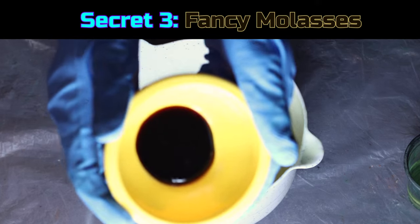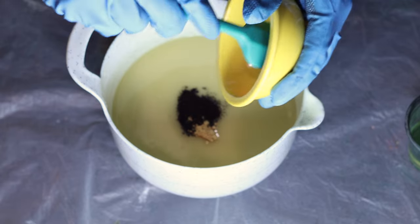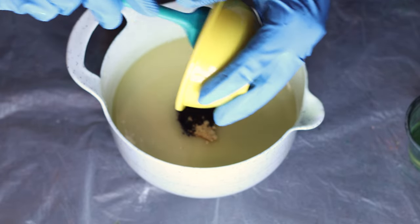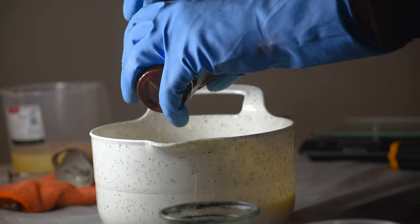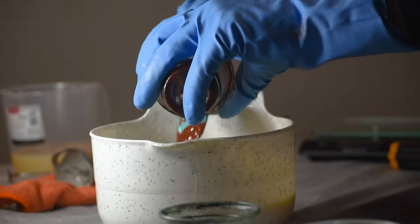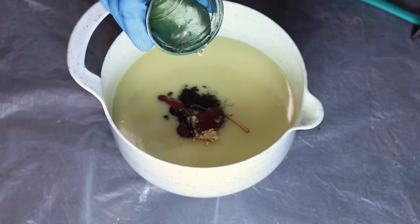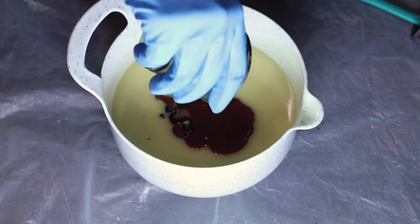Third and final secret, fancy molasses. Yes everyone, I'm adding real molasses to soap, because this is a gingerbread soap and it just wouldn't feel right not adding it. Since molasses says sugar, it's gonna accelerate the batter and cause it to heat up. If the soap gets past 70 degrees celsius, it'll run away into gel phase, and I don't really want that because I don't prefer it. So I've kept my oils and lye water cooler today to avoid that.